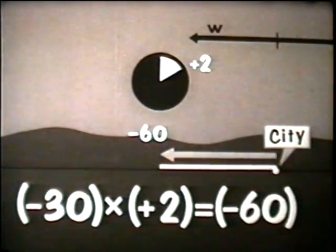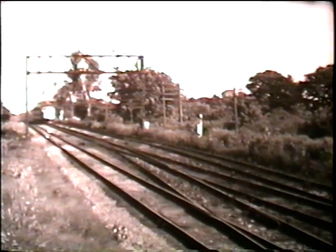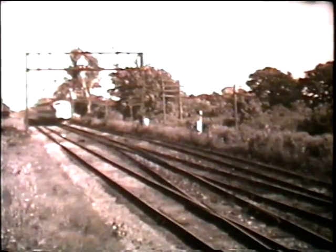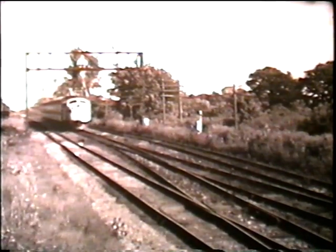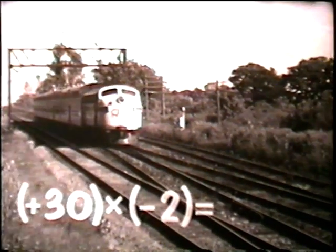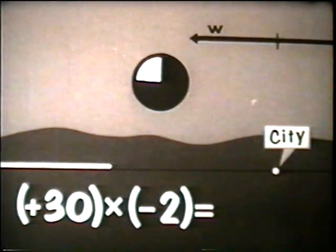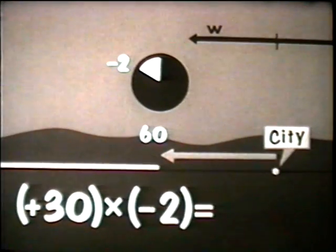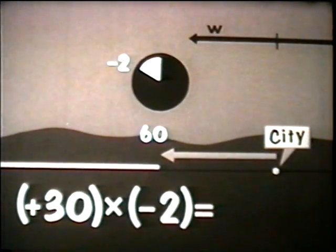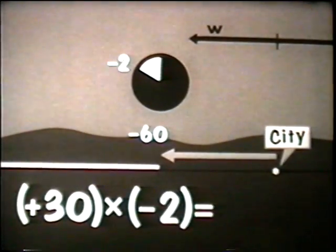Now let's change the problem to reverse the signs of the 30 and 2. A train is traveling east and will average 30 miles per hour for two hours until it reaches the city. Because the speed is eastward, 30 is positive, but 2 is negative because it represents hours before arrival. What is the train's position at this time? Two hours before arrival, it is 60 miles west of the city — a negative 60. A positive number times a negative number equals a negative number.